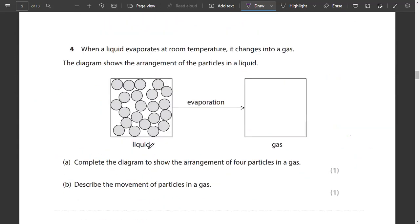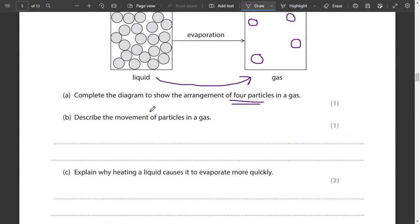Moving on to question number four. When a liquid evaporates at room temperature, it changes into a gas. The diagram shows the arrangement of particles in a liquid. Complete the diagram to show four particles in a gas. So we show four particles that all of them would be far apart from each other.